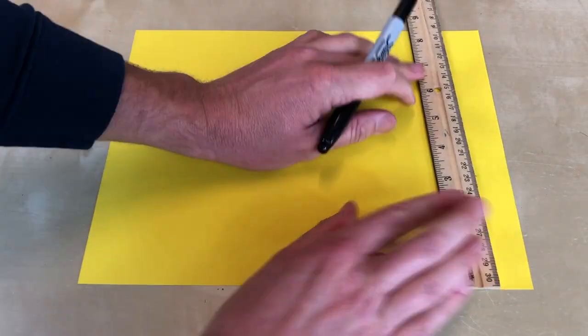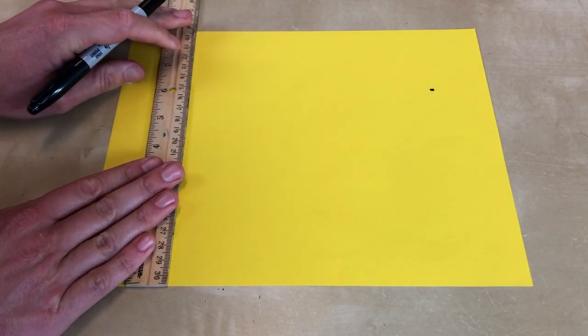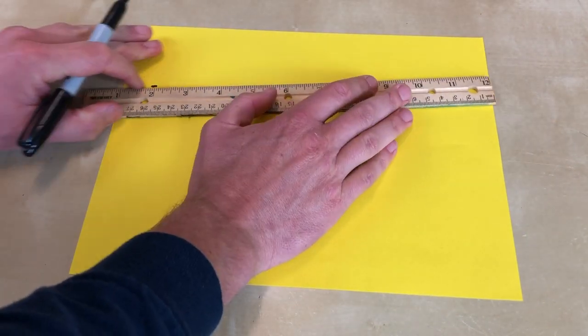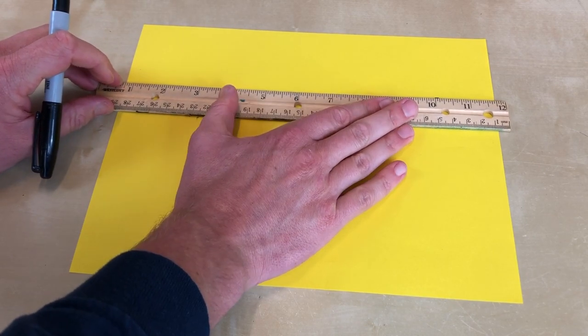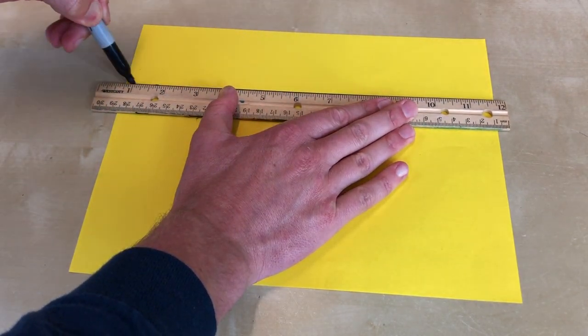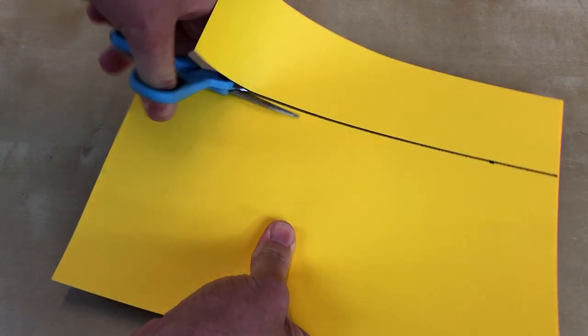That means I want paper tubes that are six inches tall. To make six-inch wide strips of paper for my tubes, I'll mark six inches on either side of this piece of paper and then draw a line across. Now that I know where I'll be cutting, I can stack some paper underneath so I can cut multiple pieces of paper at once.